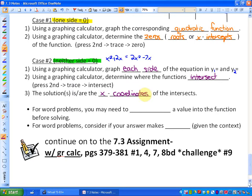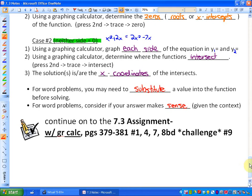And lastly, we got into word problems. And for word problems, you may need to substitute a value into the function before solving. That may be useful. And secondly, for word problems, consider if your answer makes sense given the context. Okay? And what you're going to do now is continue on to the 7.3 assignment from your textbook. And you will need a graphing calculator for this assignment.